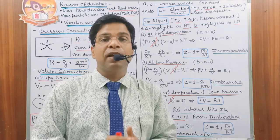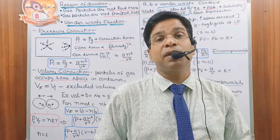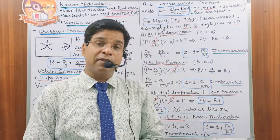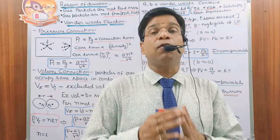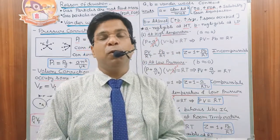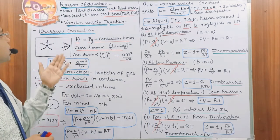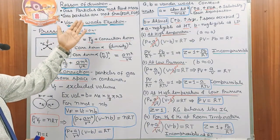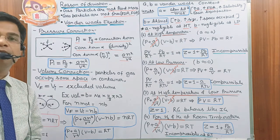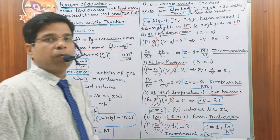The first reason for deviation: gas particles are not point masses — they have certain dimensions and must occupy part of the space in the container. The second reason: in kinetic theory we assumed no interaction exists among particles, neither attraction nor repulsion. But for real gases, particles always have some force of attraction at room temperature. However, hydrogen and helium also show a force of repulsion among particles at room temperature. So the second reason for deviation is that gas particles are not free from each other.